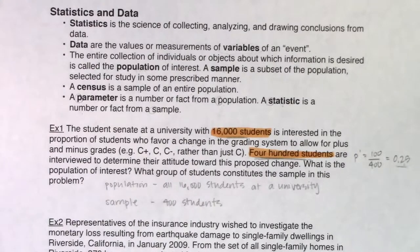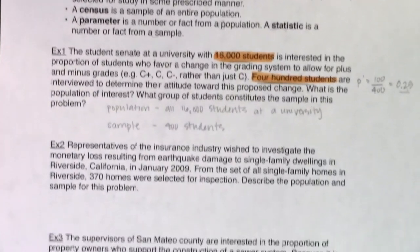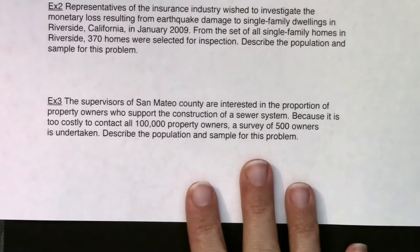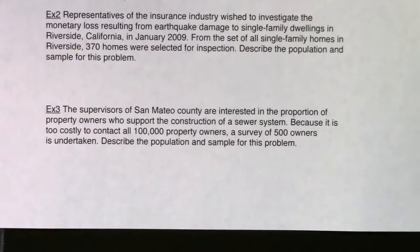We usually give ourselves a little bit of wiggle room. That wiggle room is called a margin of error, which we'll get to in chapter eight. And we're obviously not there yet, but that's the idea behind statistics. Instead of going after all 16,000, go after a sample, get a number and say, that number is probably close to the number I would get to this. And I didn't have to spend the time or money. So I'm going to go through with examples two and three. I would suggest you hit pause on this video, and then you try and do examples two and three, and then check back and see if you got the answers correct. So as we scooch this up, let's take a look here. So example two, representatives of the insurance industry wish to investigate the monetary loss resulting from earthquake damage to single family dwellings in Riverside, California, in January of 2009. From the set of all single family homes in Riverside, 370 homes were selected for inspection, describe the population and sample.